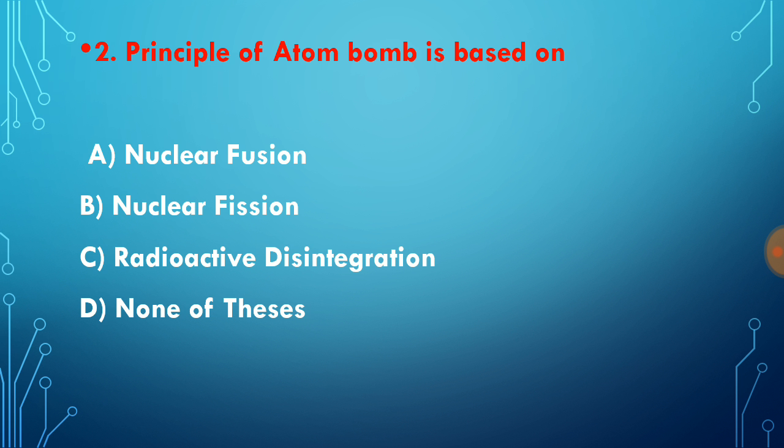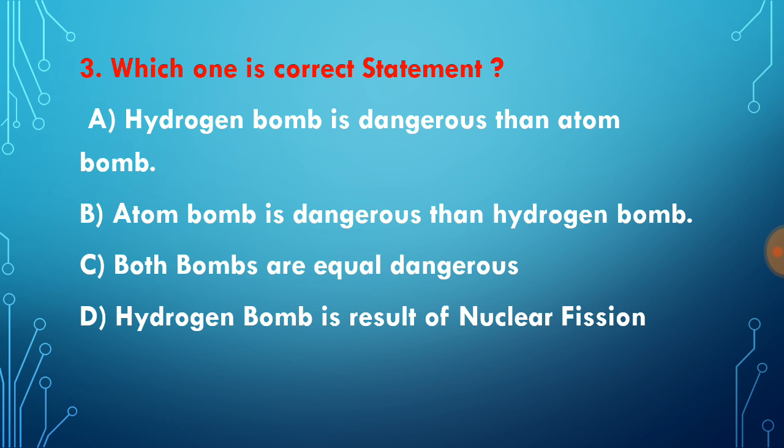In atomic bomb, lighter nuclei or lighter atoms fuse to give a heavy atom. Because of that, energy is released. The process or principle of atomic bomb is known as nuclear fission.